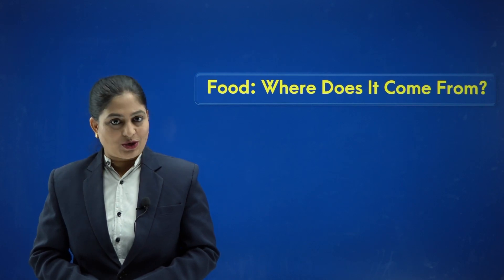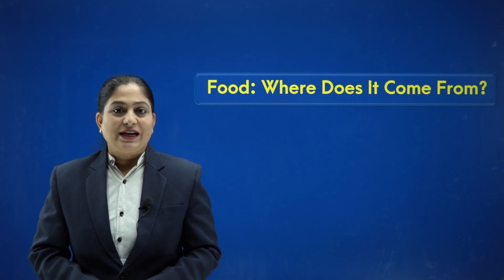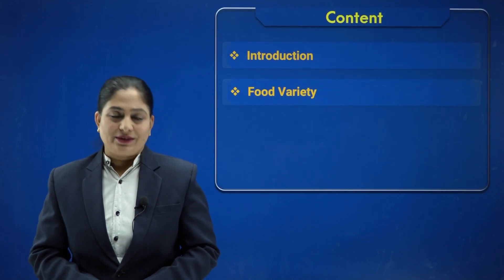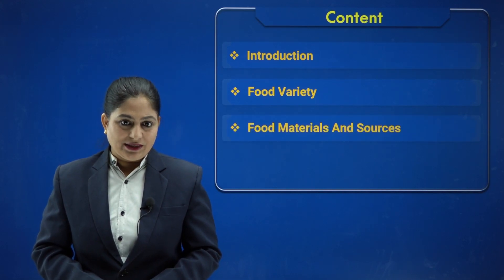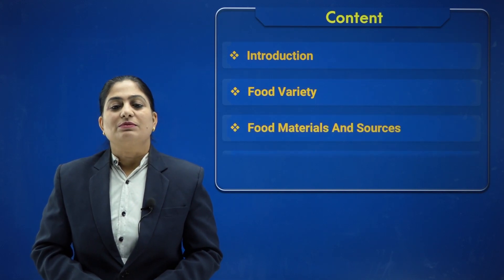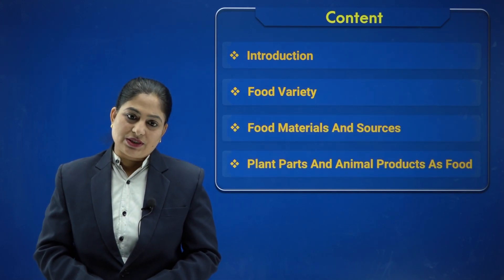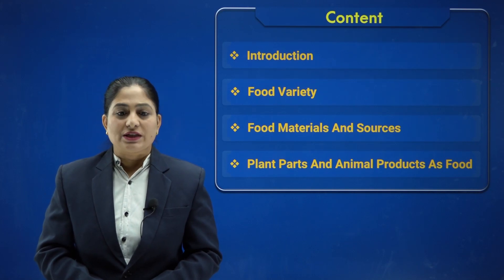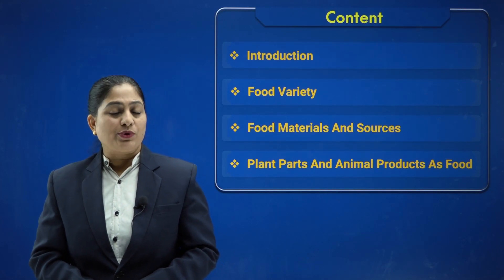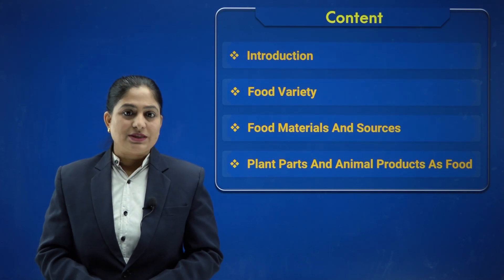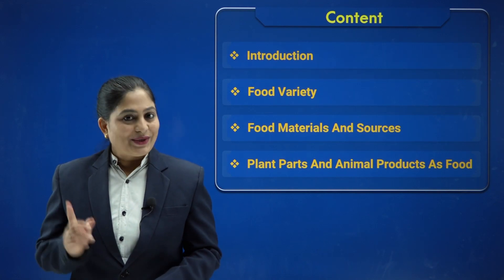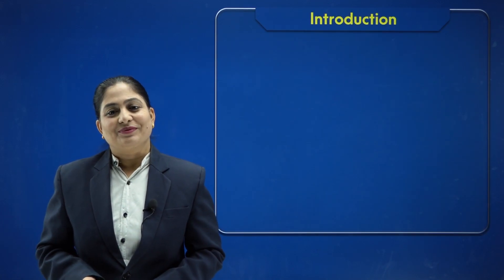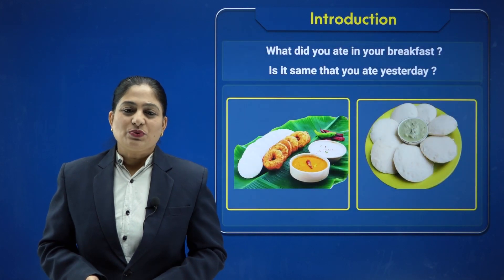In this chapter we are going to study various topics: first the introduction, then food variety, then food materials and sources, and finally the various parts of plants and products of animals in terms of food. So are you ready? Let us start.